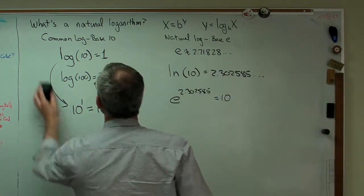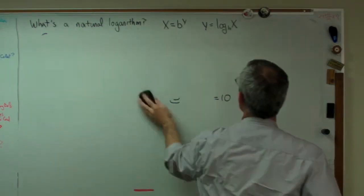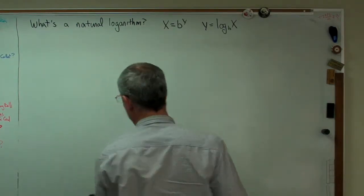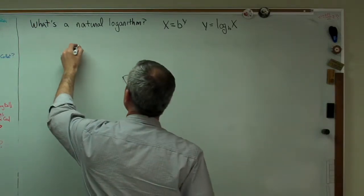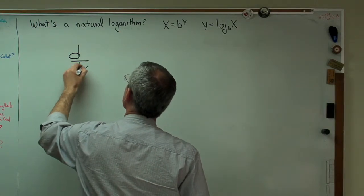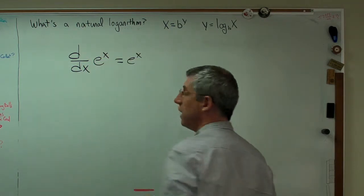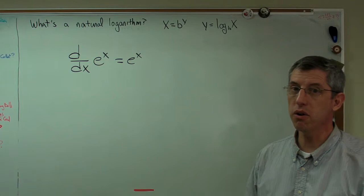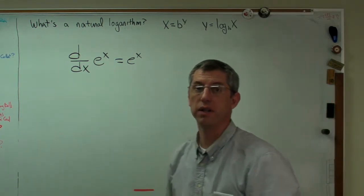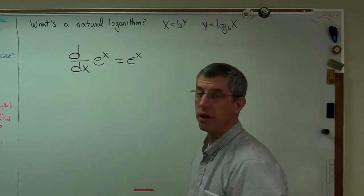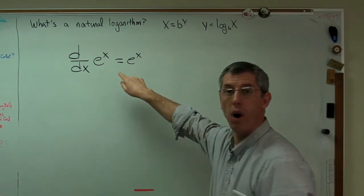Well, the most obvious reason is how it behaves when you're doing derivatives and integrals. It's how it's treated when you're doing calculus. Here's the big deal. The derivative of E to the X is E to the X. That means the integral of E to the X is E to the X. This makes things very simple. When you're dealing with common logs, this isn't true anymore. And I'm going to show you real quick why this is true. It turns out to be very simple.